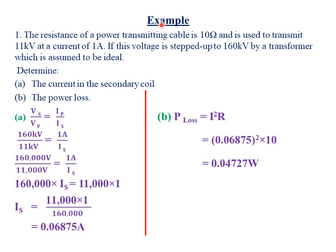Today we're looking at further examples involving mains electricity. Our first example reads that the resistance of a power transmitting cable is 10 ohm and is used to transmit 11 kilovolts at a current of 1 ampere. If the voltage is stepped up to 160 kilovolts by a transformer, which is assumed to be ideal, determine part A: the current in the secondary coil.